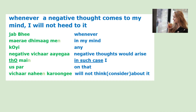Let us break the sentence down. Jab bhi — whenever. Mere dimaag me — in my mind. Koi — any. Negative vichar aega — negative thoughts would arise. We are using the English word 'negative' here. To main — in such case, I. Us per — on that. Vichar nahi karunga — will not think or consider about it. Karunga is future tense, which you can check in lesson number seven or click the link.